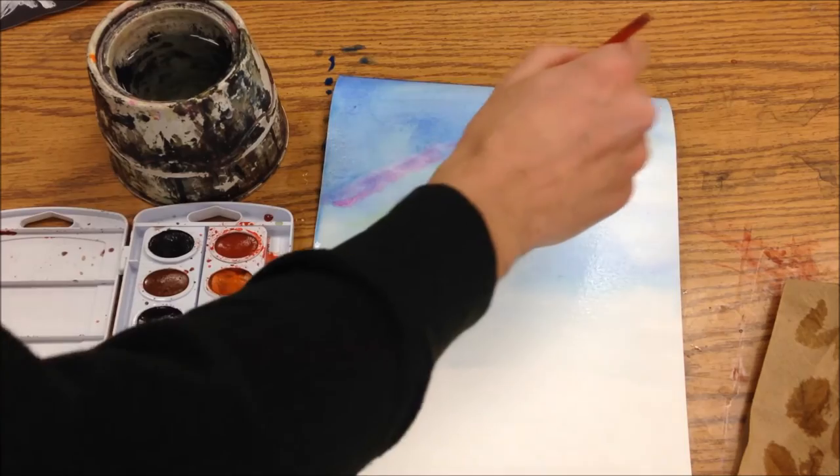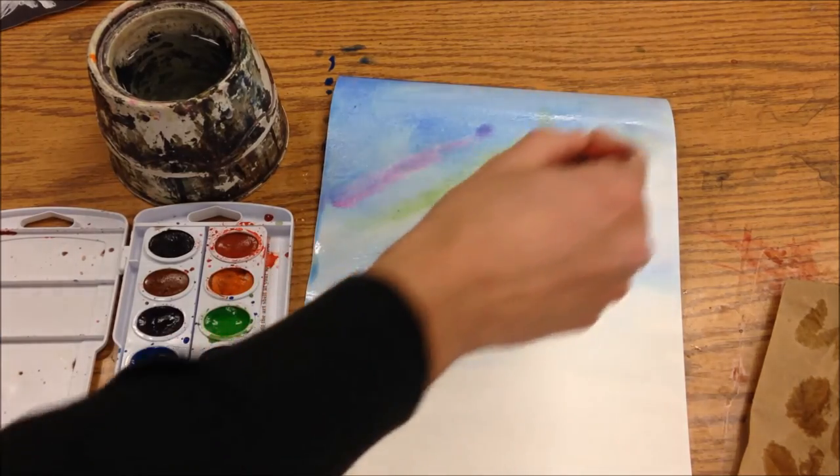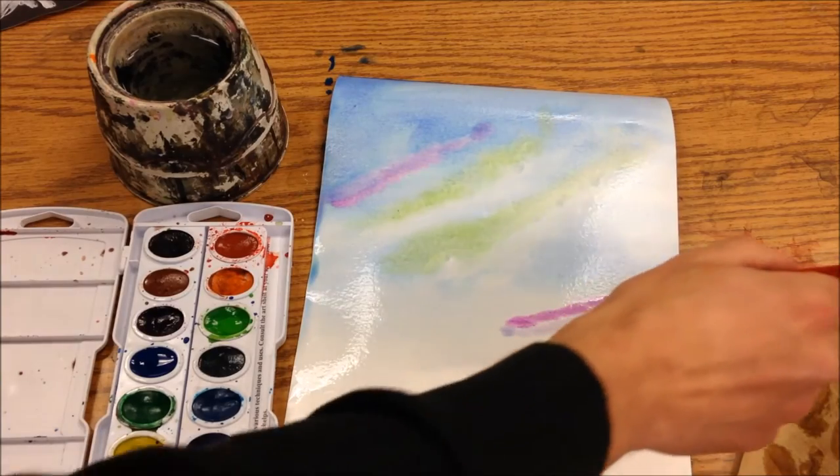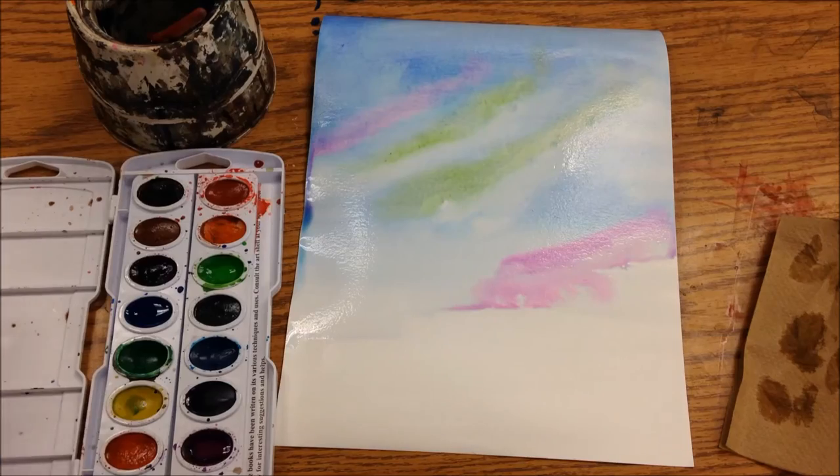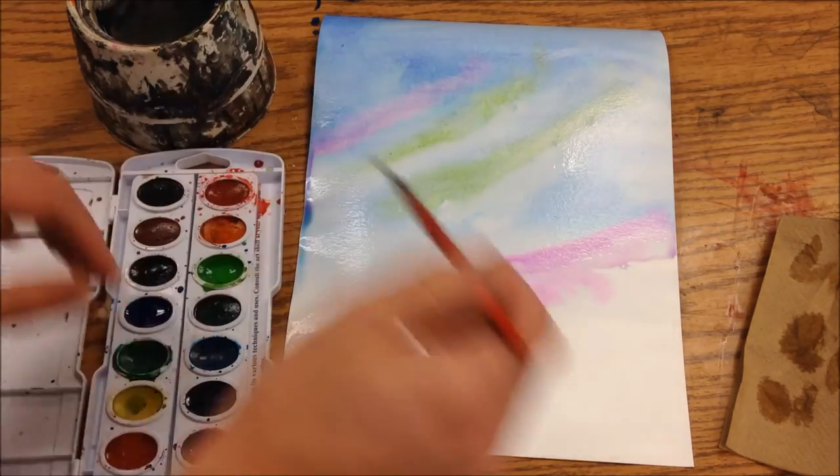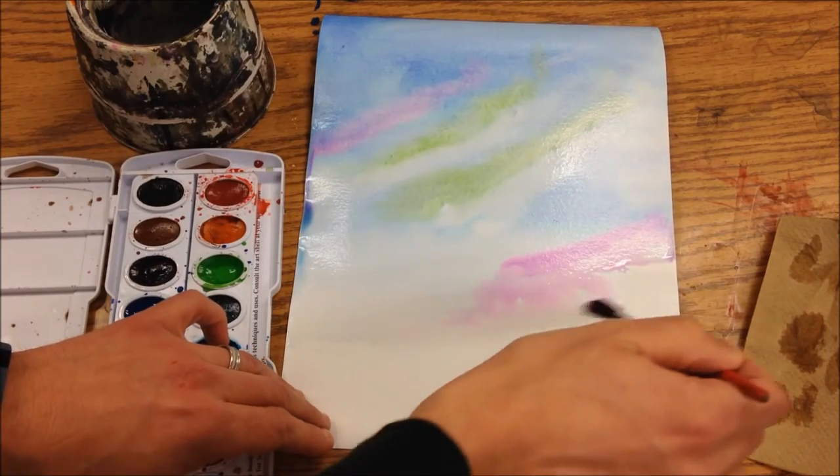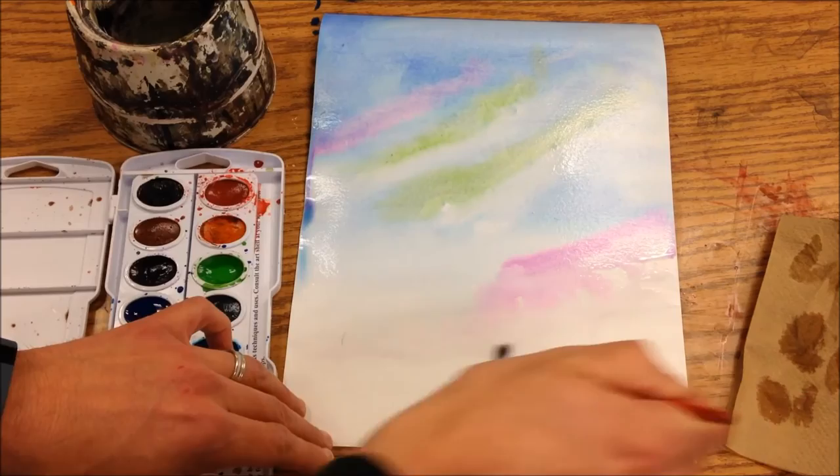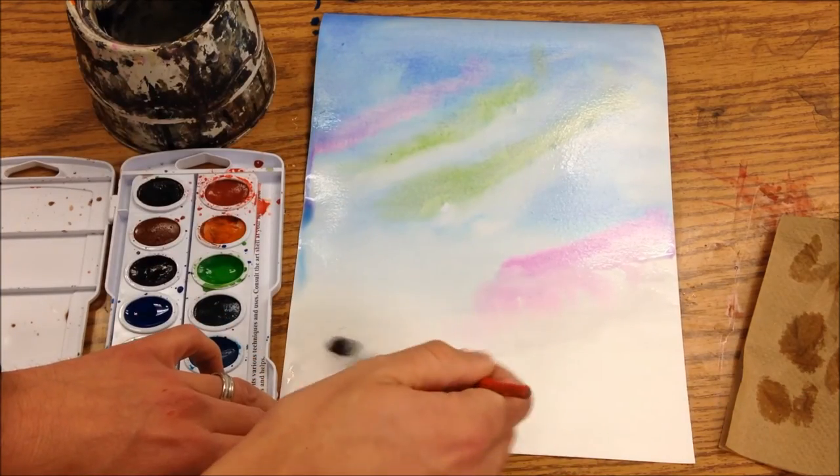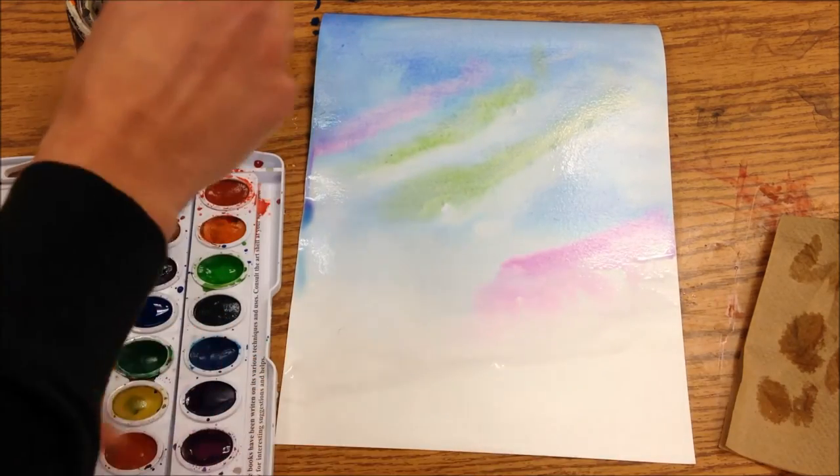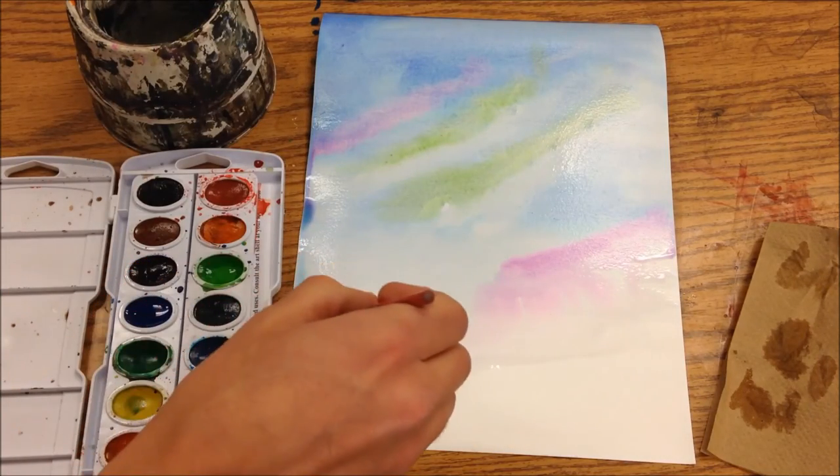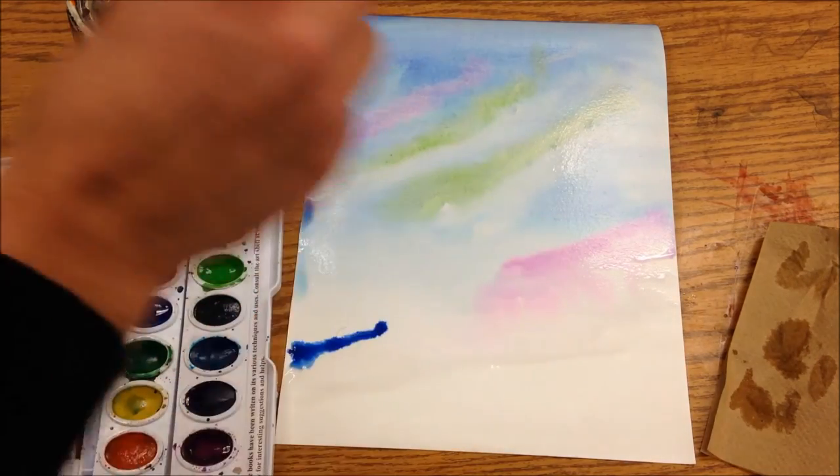Well, yours doesn't have to be aurora borealis. You could do something that's just kind of like a stormy sky. So I'm kind of leaving this down here as almost like I've just suggested that there's a snowy landscape there. Slight horizon line.